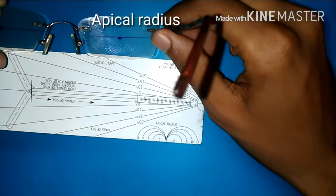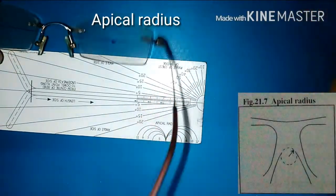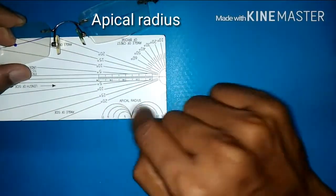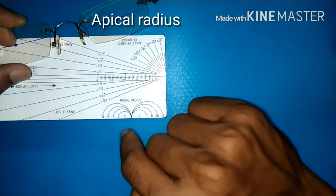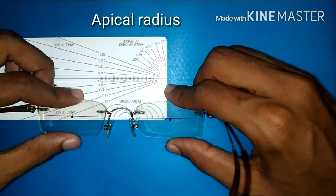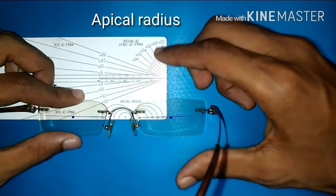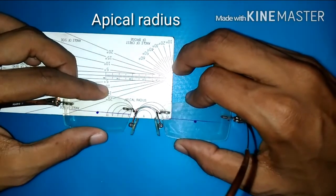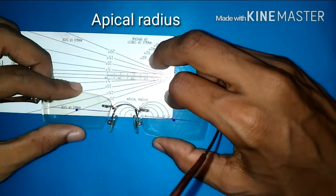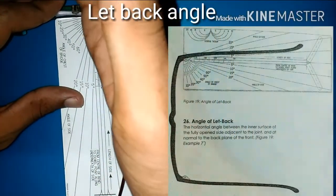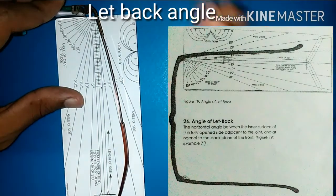The apical radius is the radius of the arc forming the lower edge of the bridge. To measure that, there are arcs given from 5 to 12, and we have to match the exact arc where the frame and the ruler match. With 7 it's smaller, with 8 it's almost equal, with 9 it's bigger — so we go for 8.